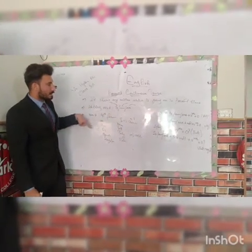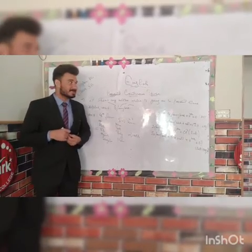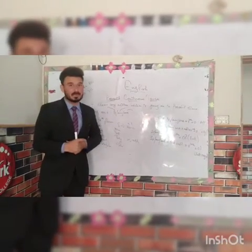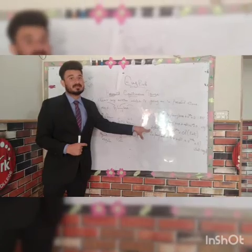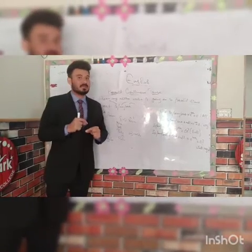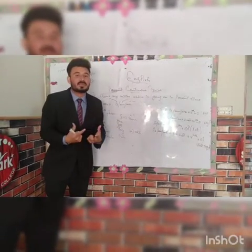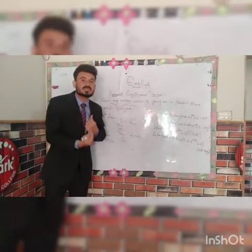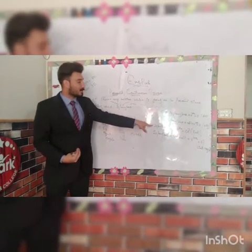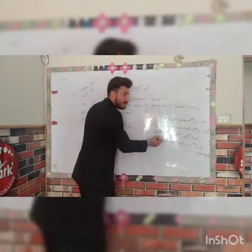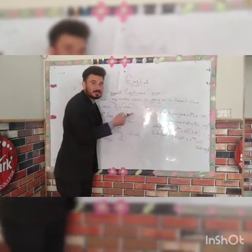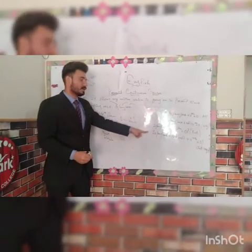There are three types of sentences: affirmative, negative, and interrogative. 'I am playing cricket' is affirmative. 'I am not playing cricket' is negative. When you make an interrogative sentence, it is a question. In interrogative, it is mandatory to put the helping verb before the subject.